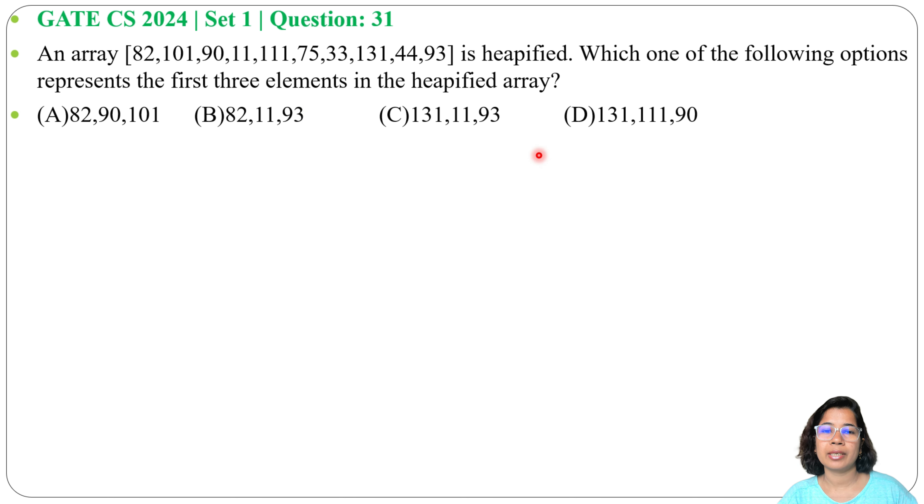In case of max heap, parent value is higher than its child value, and root contains the maximum element. In the given array, 131 is the maximum element, so it should be present in the first position of the array.